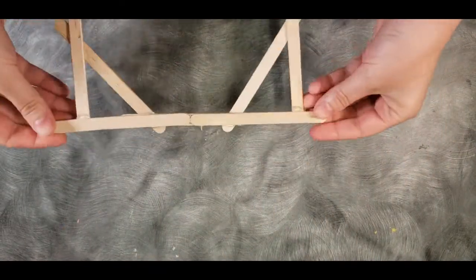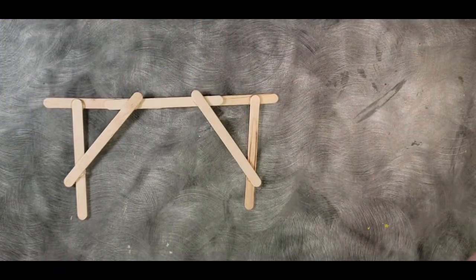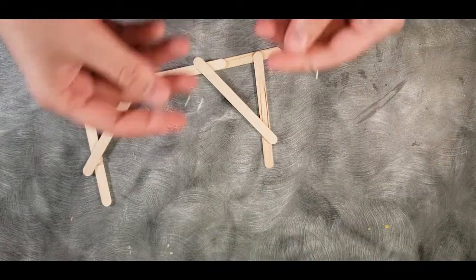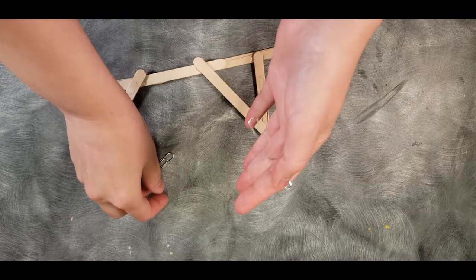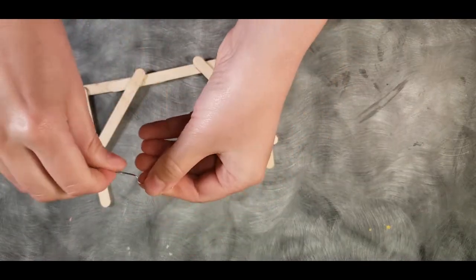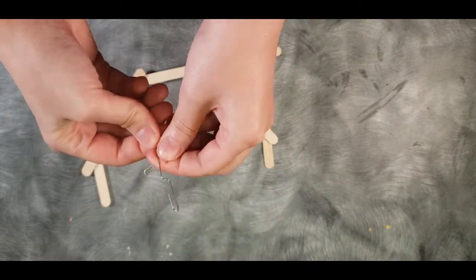Once your structure is dry and ready for your next steps, you'll want to get your paper clips and your tape. Take two of your paper clips, unbend them, and then rotate one of them so it's at a 90 degree angle between the top and the bottom.